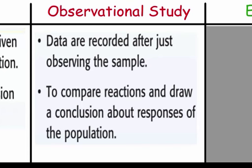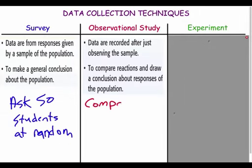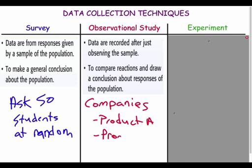An observational study is a little different — you observe something and then make conclusions about what you saw or what reactions occurred. This happens a lot with companies selling products. For example, if they had product A and product B, they'd give each to consumers and see which one they like better, then draw conclusions. You're observing and making conclusions, not asking specific questions.